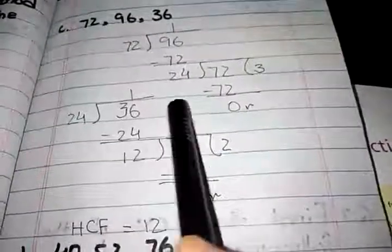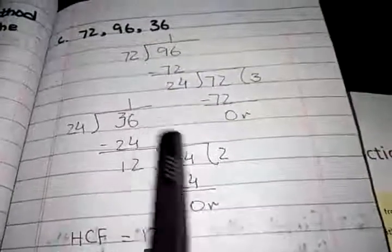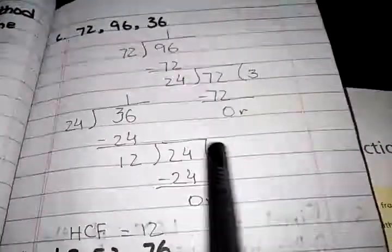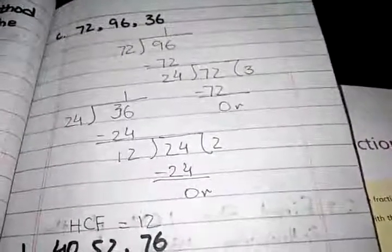24 ones are 24. 6 minus 4 is 2, 3 minus 2 is 1. The next dividend is 24. 12 twos are 24. So 12 is the highest common factor of 72, 96, and 36.